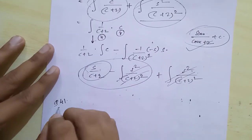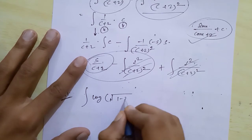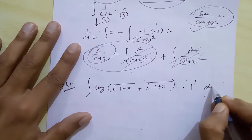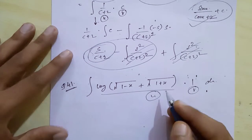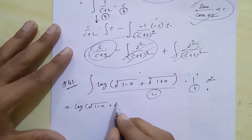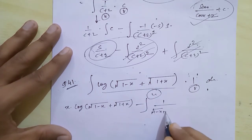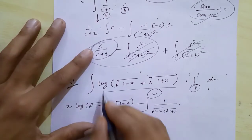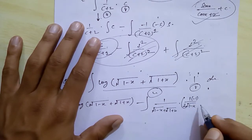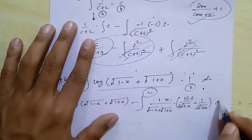Next is question number 41: integral of log(√(1−x) + √(1+x)). We take the log term as u function and 1 as v function, so u · integral(x) gives x · log(√(1−x) + √(1+x)) minus integral of u' where the derivative of log is 1/a and then derivative gives 1/(2√(1−x)) · (−1) + 1/(2√(1+x)), multiplied by integral of v dx which gives x.